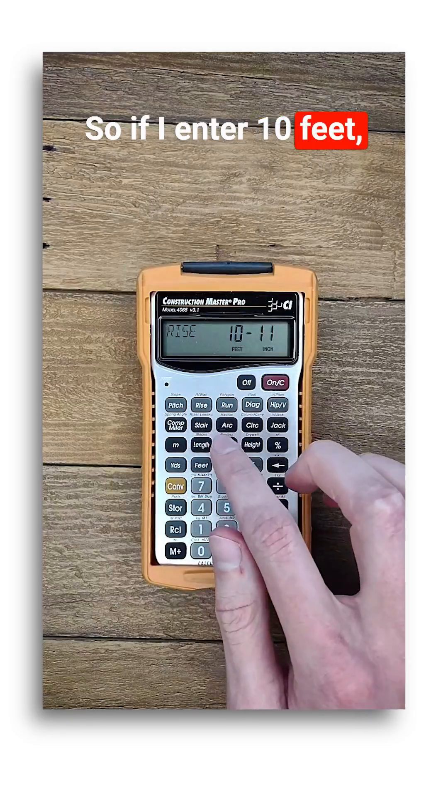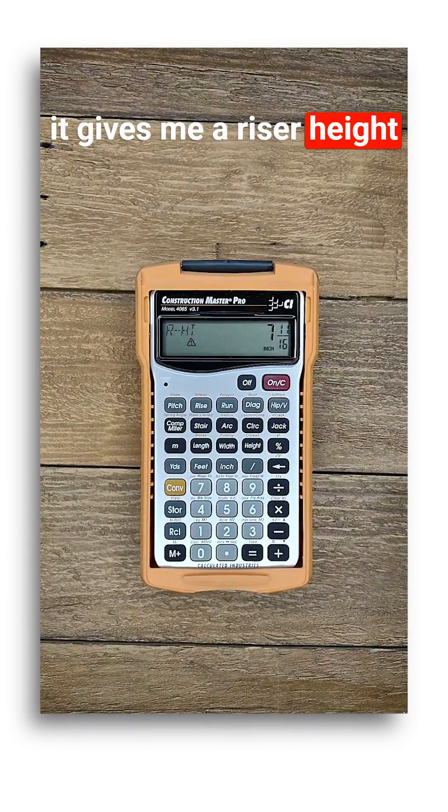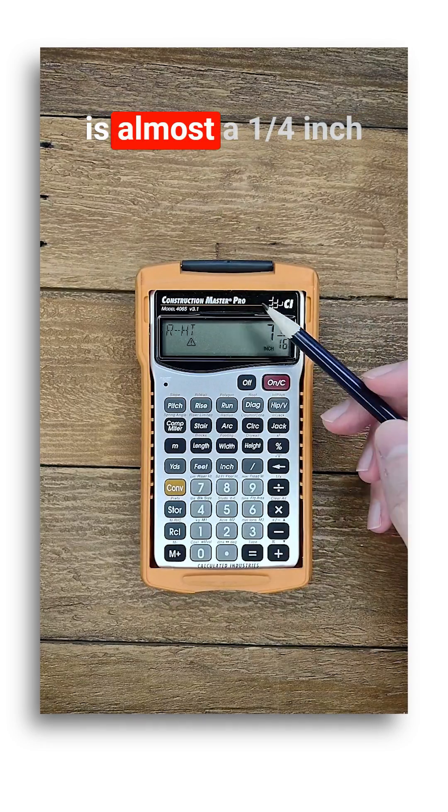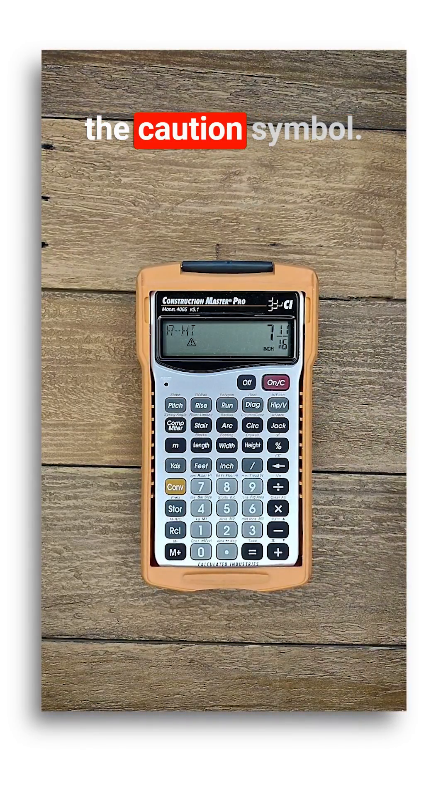So if I enter 10 feet 11 inches, push rise and then the stair button, it gives me a riser height close to the stored value. But you'll notice this is almost a quarter inch above the stored riser height, which is why it shows the caution symbol.